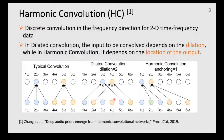Harmonic convolution is a discrete convolution in the frequency direction. To capture the harmonic structure specific to speech, harmonic convolution differs from standard convolution in that the output of the convolution is the fundamental frequency.